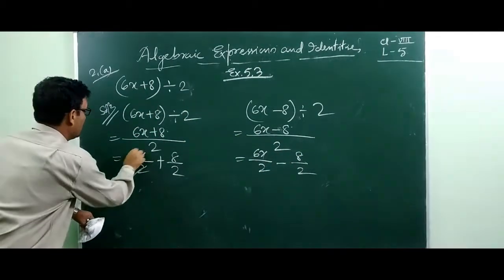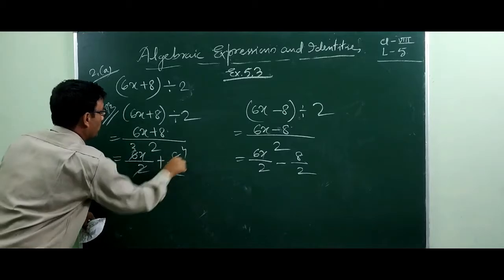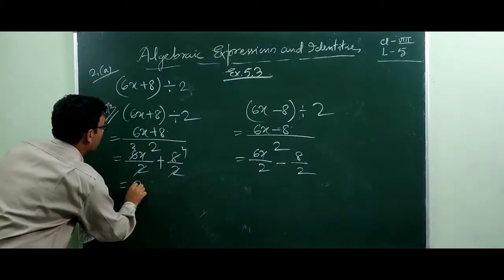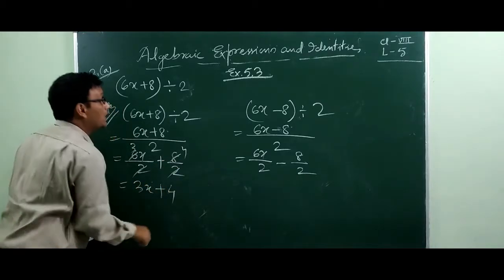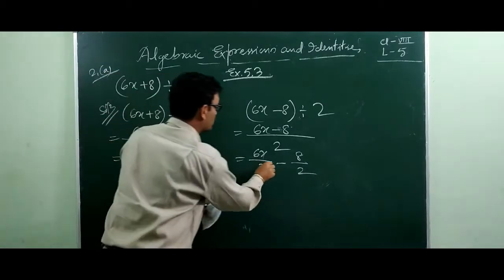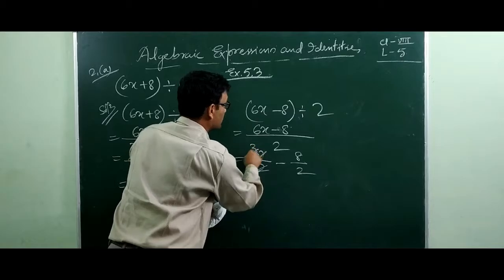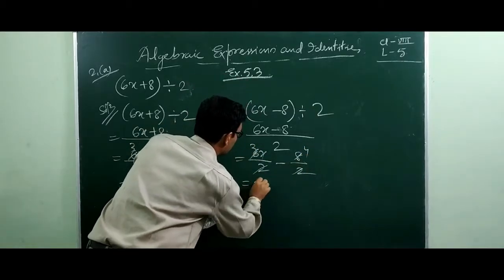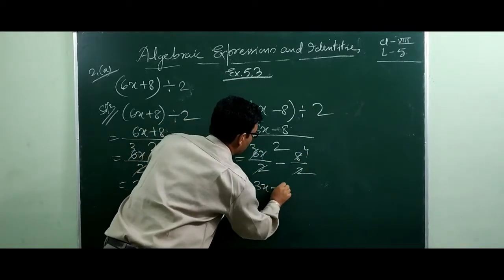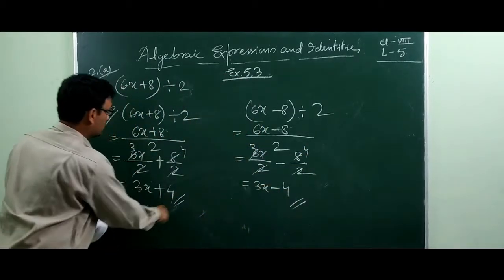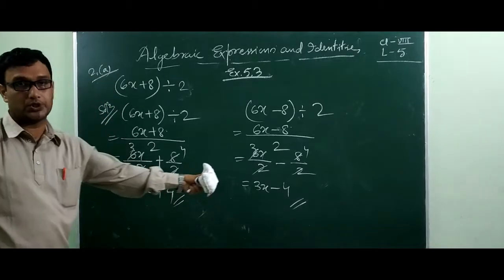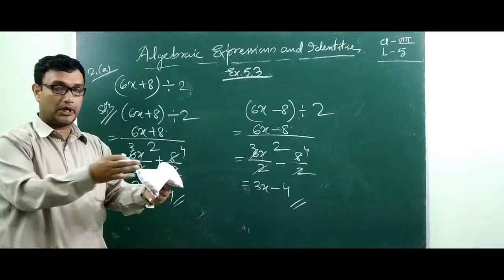Cancel and you get 3 here and 4 here, that means 3x plus 4. For the minus version, you get 3x minus 4. One question is plus, one question is minus. Like this, you can solve the remaining questions in question number 2.